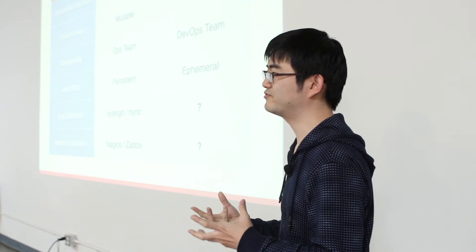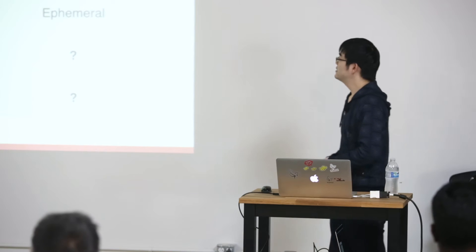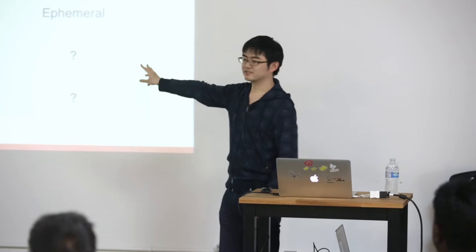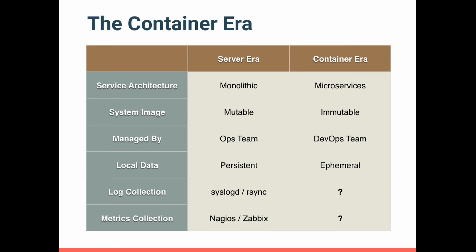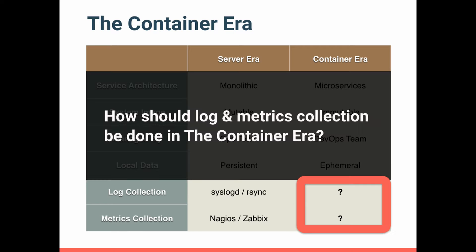The DevOps team, the developers, can directly deploy the system to the server. Related to that, data was persistent in the server era — if you produced some logs on local disk, it was persistent. However, in the container era, everything is ephemeral. You will deploy containers often, again and again, and every time you will lose data basically. So the question is how log collection should work and how metrics collection should work in this container era. Just using syslogd, it worked before in the server era because the system was mutable. And the metrics systems we were using were Cacti and Zabbix. So what should we do — that's the topic of this talk.